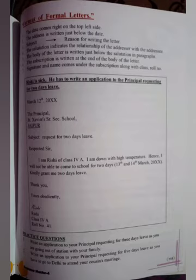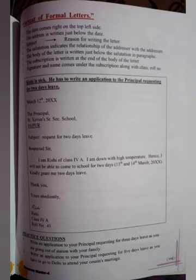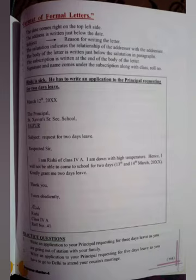In the formal letter format, the address is written just below the date, followed by the subject — which is the reason for writing the letter — then the salutation, which indicates the relationship of the addresser with the addressee. The body is written in paragraphs below the salutation. The subscription comes at the end, and the signature and name come under the subscription along with the class and roll number.